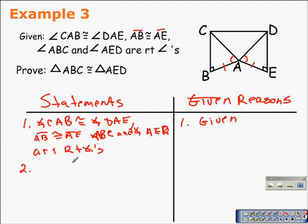We need to prove that triangle ABC is congruent to triangle AED. In the triangles, we have one angle and a side congruent. We know that angle ABC and angle AED are right angles, so we can establish that they are congruent. They're not marked congruent yet, so we need to do that.